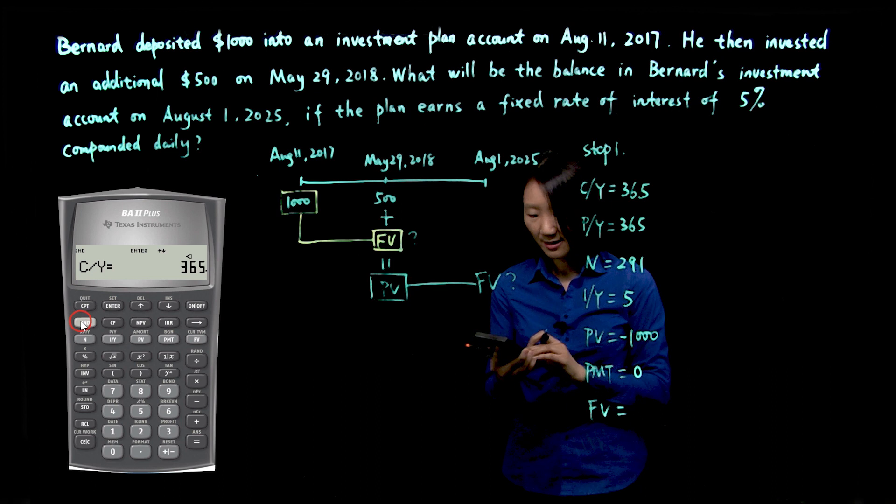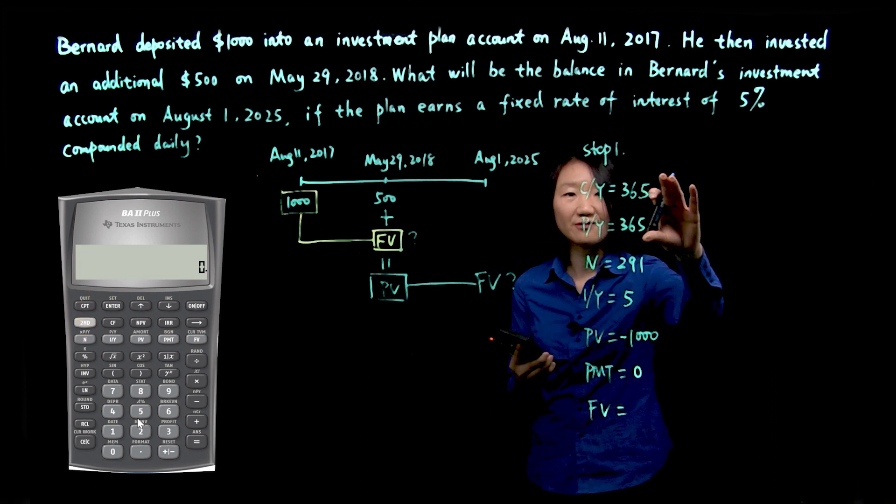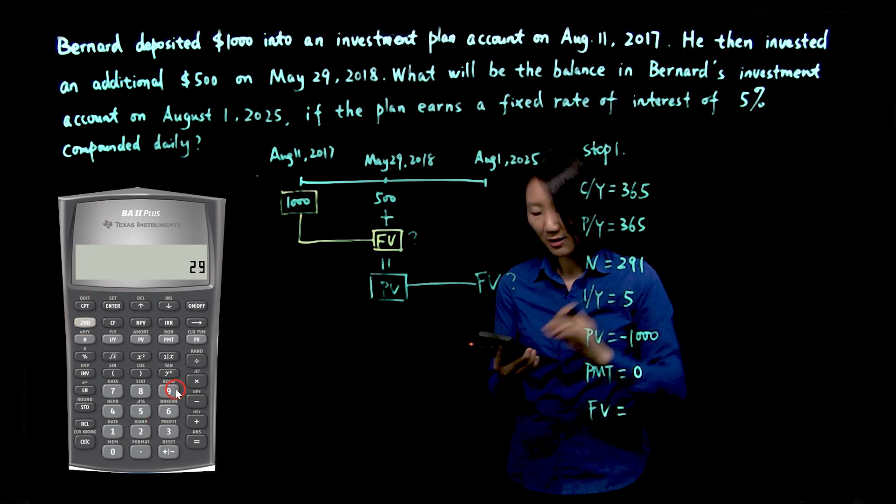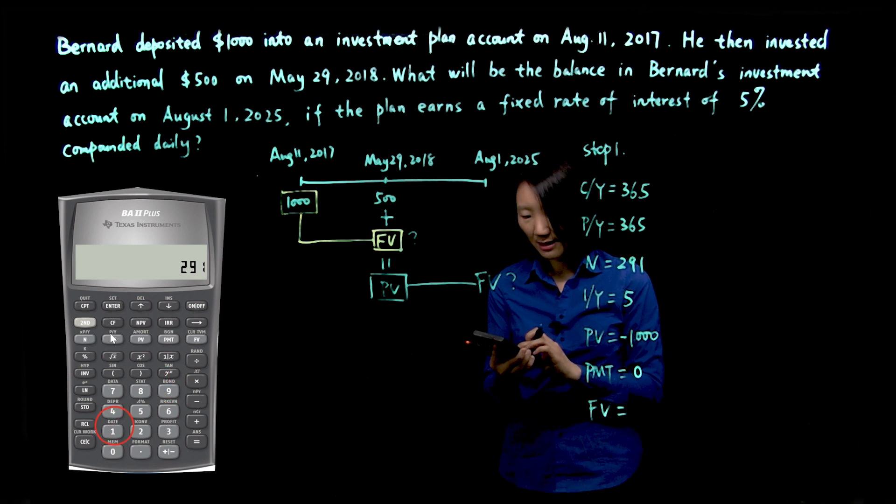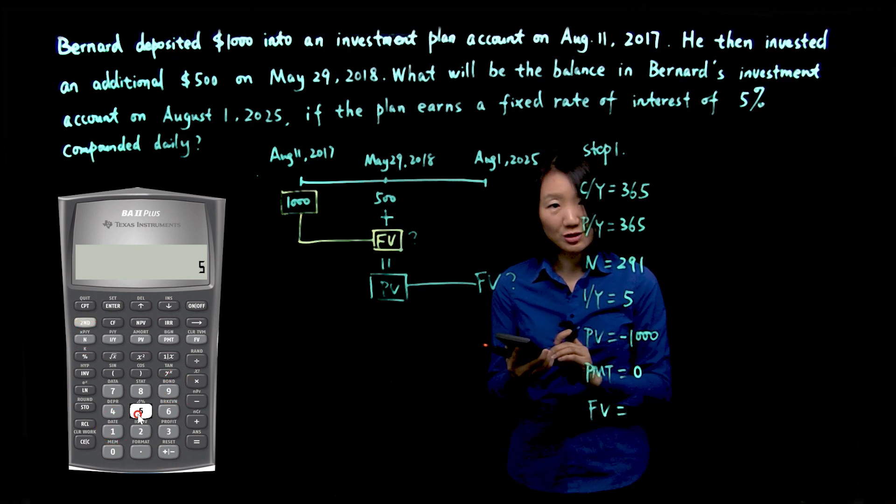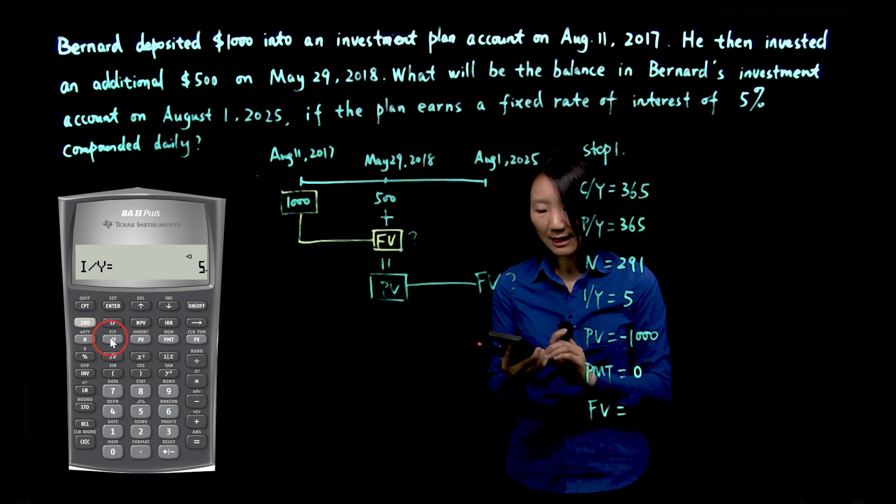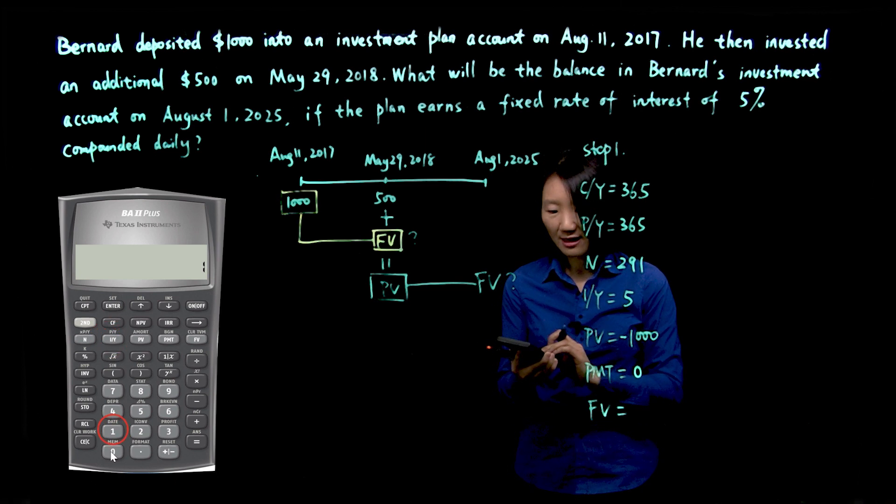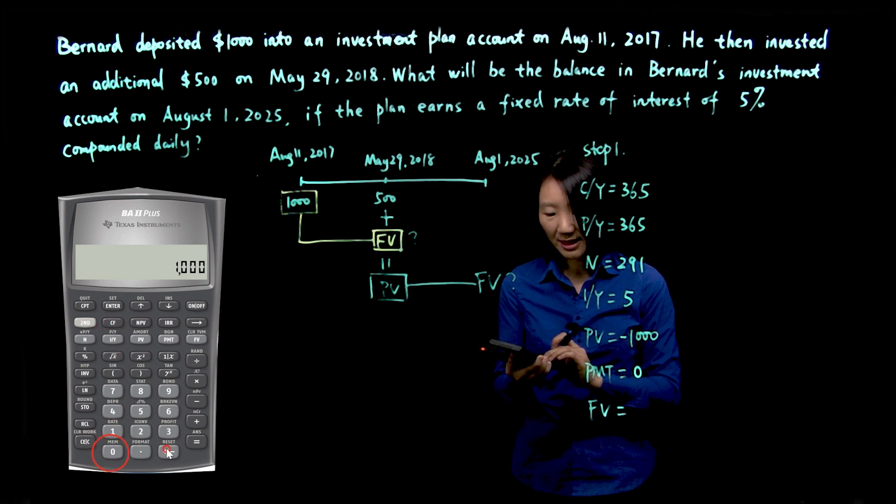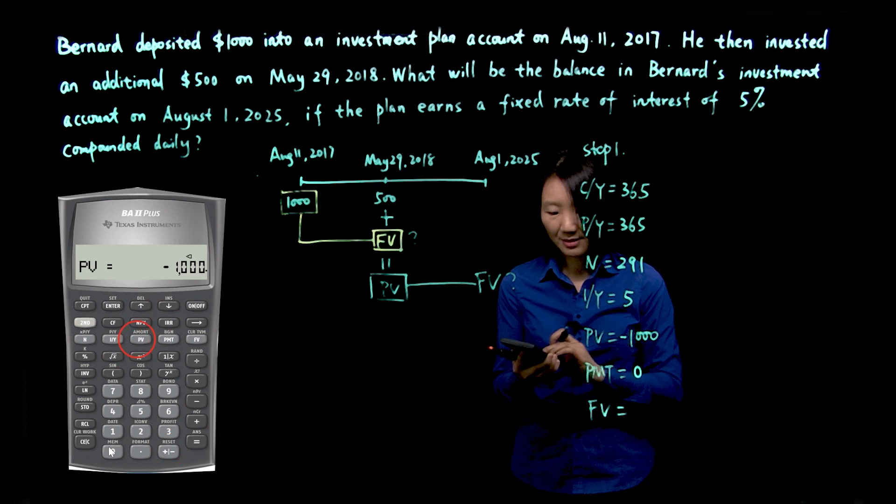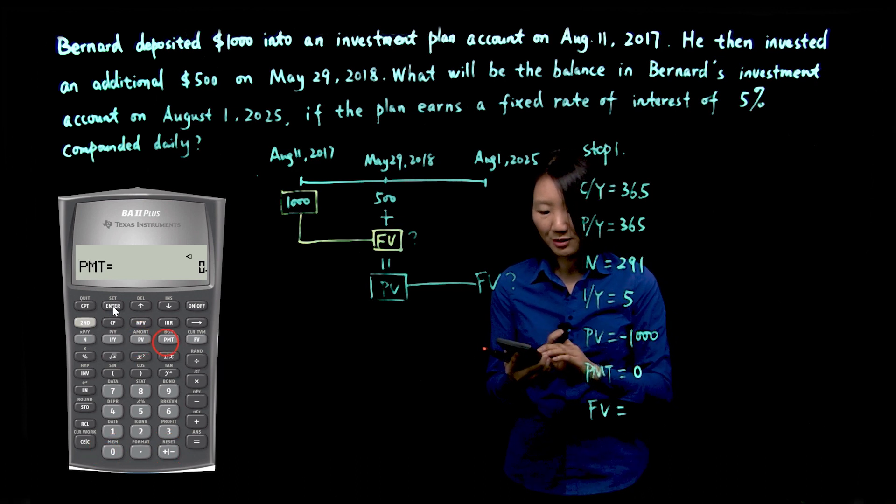So for N, second quit. We'll get out of that function. For N is 291. Interest rate is 5, IY. PV is 1000. We make it negative. PMT is zero. Compute future value.